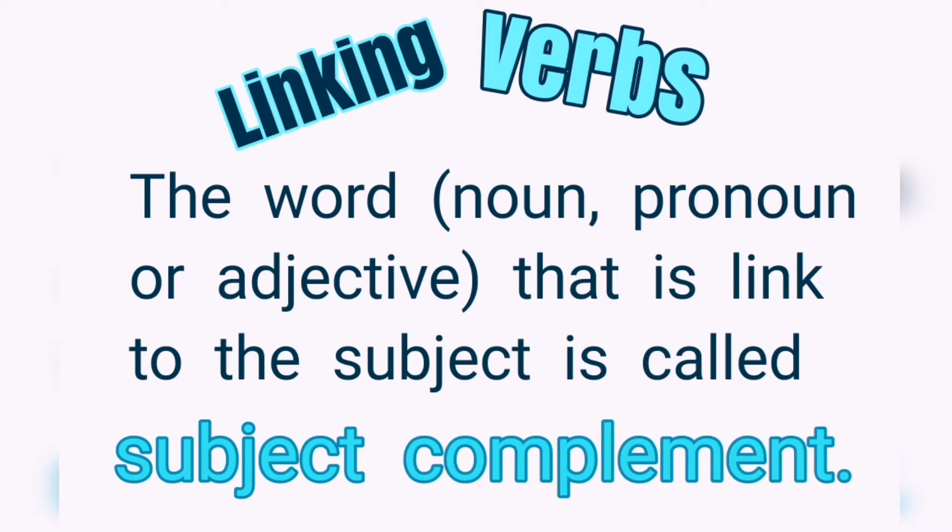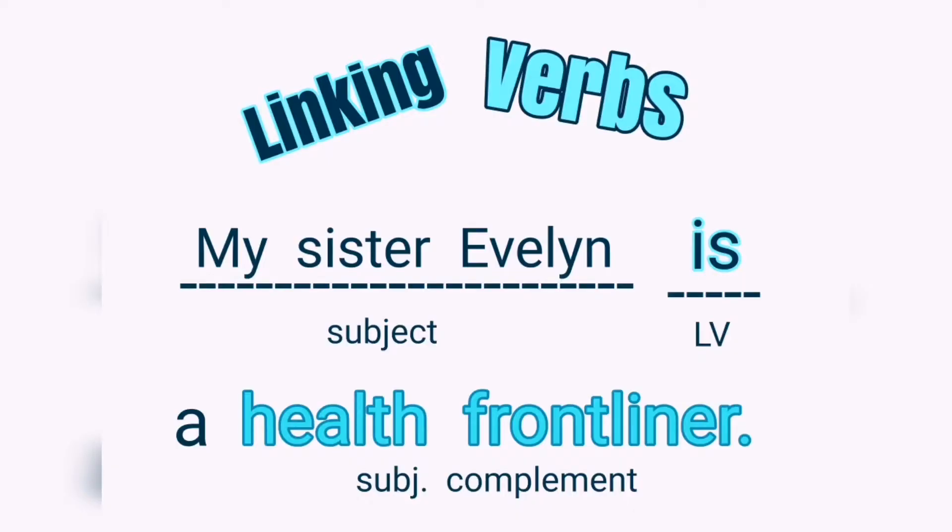The word that is linked to the subject is called the subject complement. Let's illustrate the use of linking verb and the subject complement in this sentence: My sister Evelyn is a frontliner. In our sentence, the subject 'my sister Evelyn' is linked by the linking verb 'is' to the subject complement 'frontliner.' Remember that the subject complement always refers back to the subject of the linking verb.